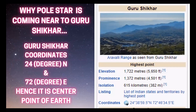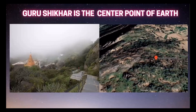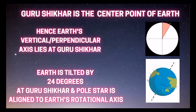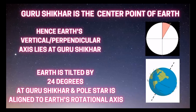That is why Guru Shikha is the center point of the Earth — situated in the hills in India. Hence, Earth's vertical or perpendicular axis lies at Guru Shikha, and Earth is tilted by 24 degrees at Guru Shikha.